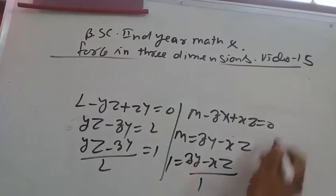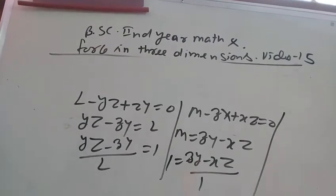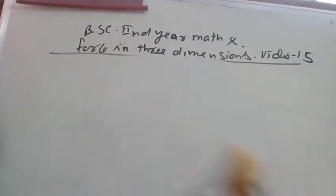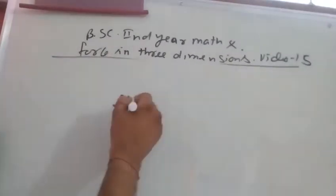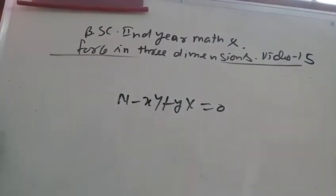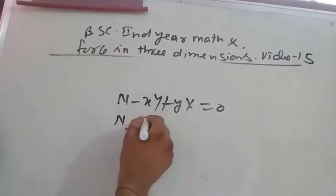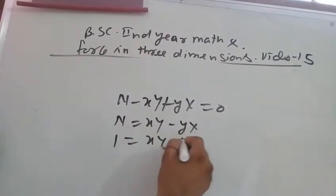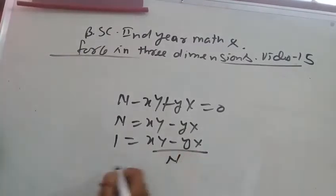And the third relation: one equals XY minus YX upon N. So one equals two equals three equals one.